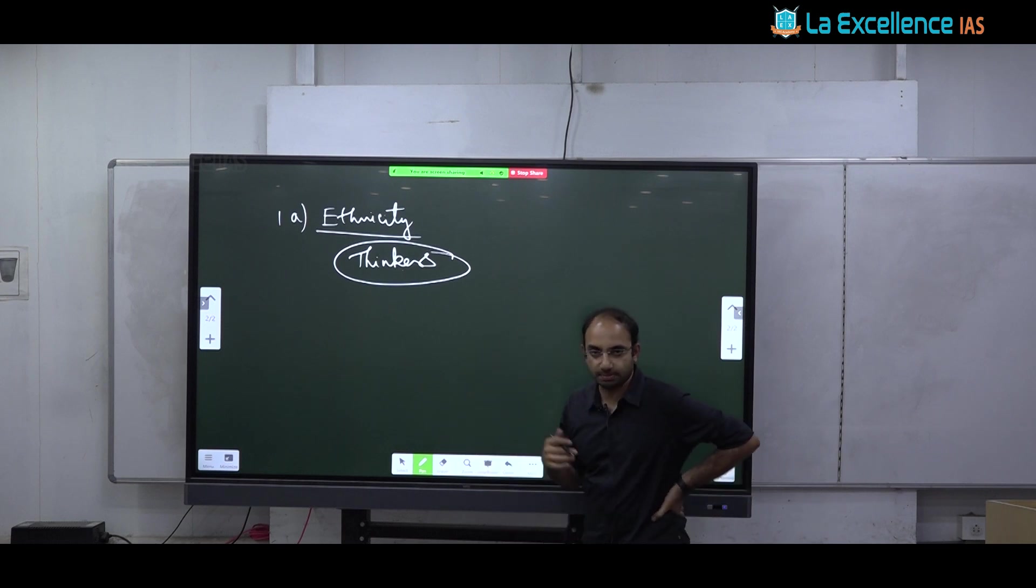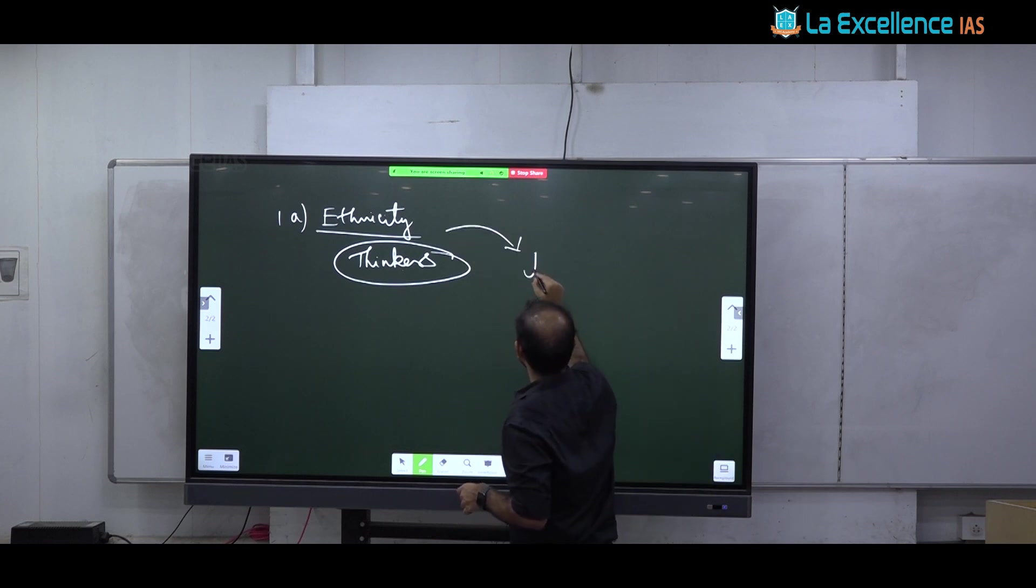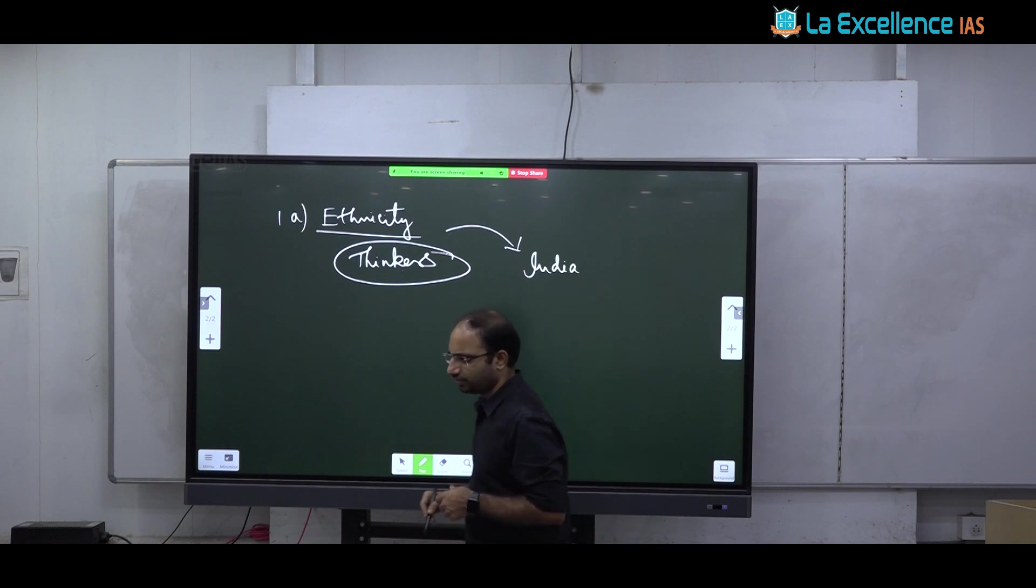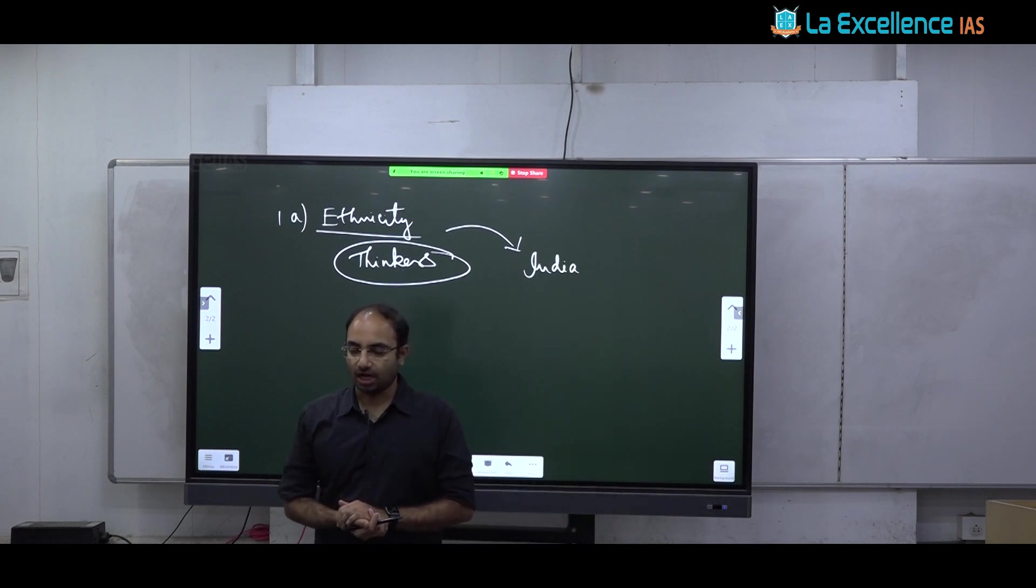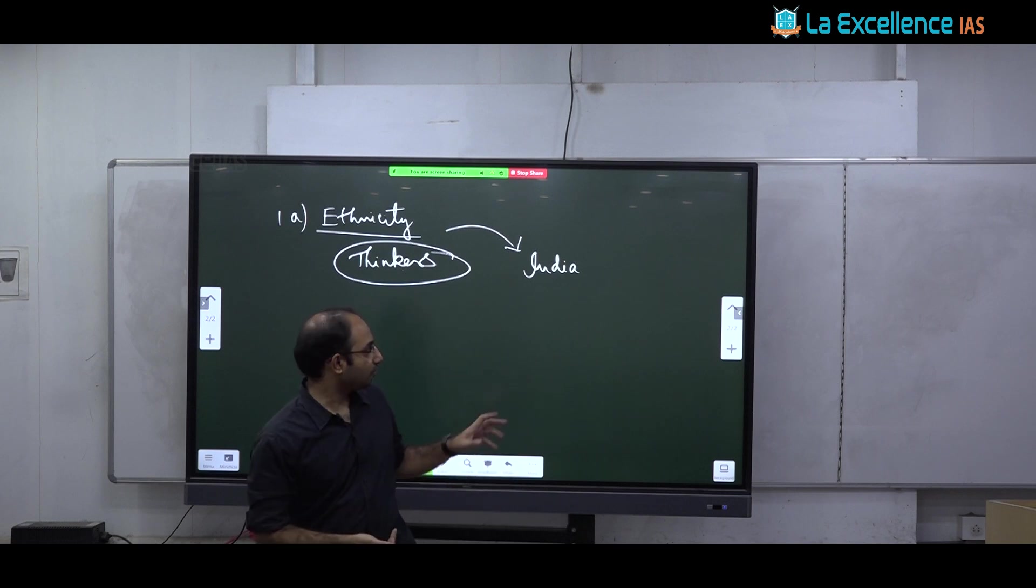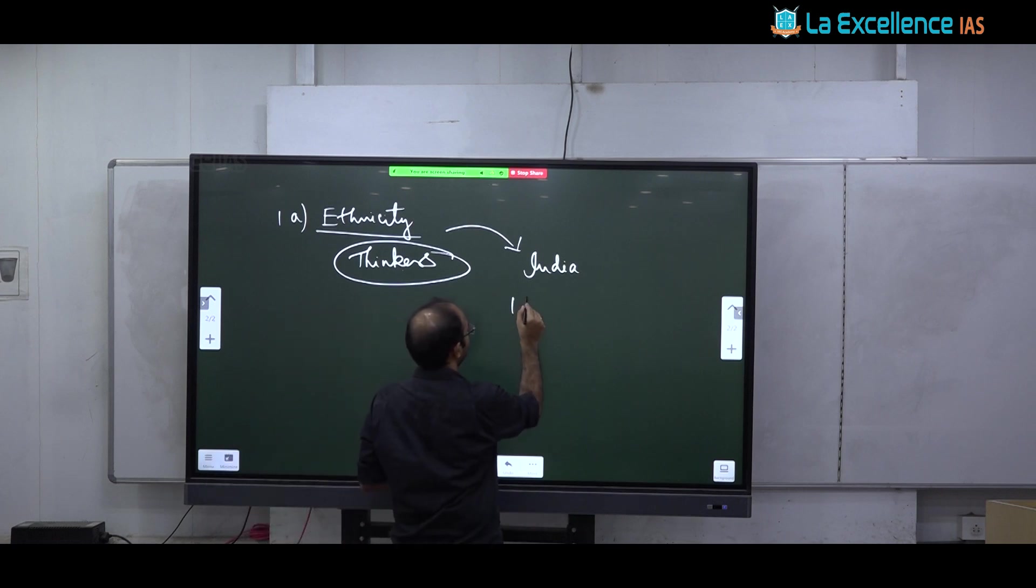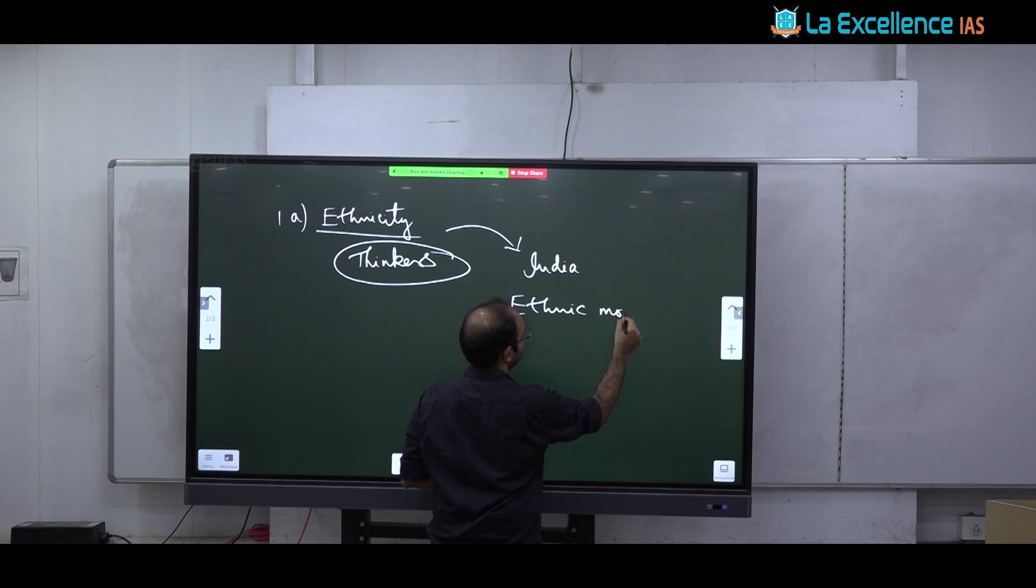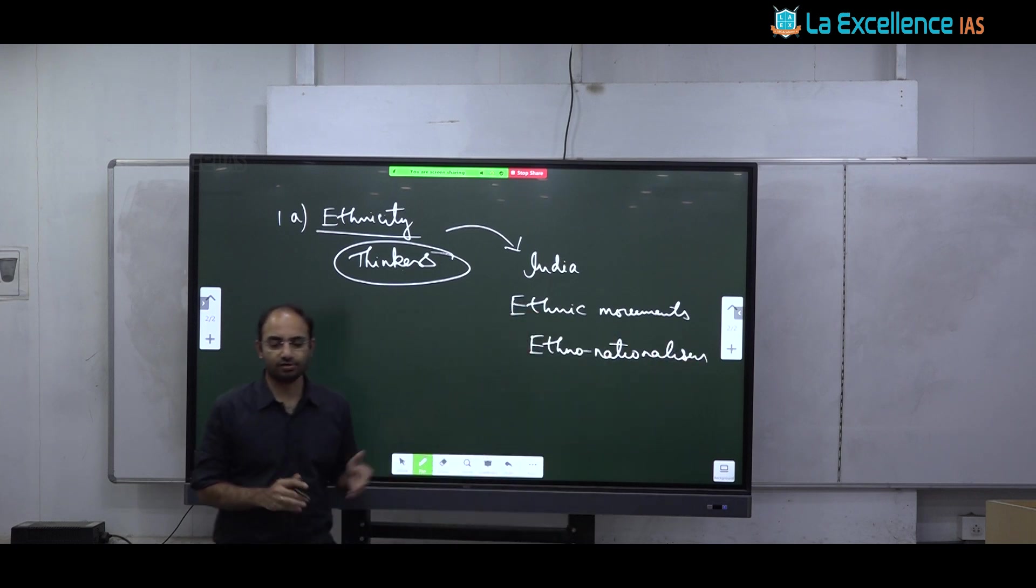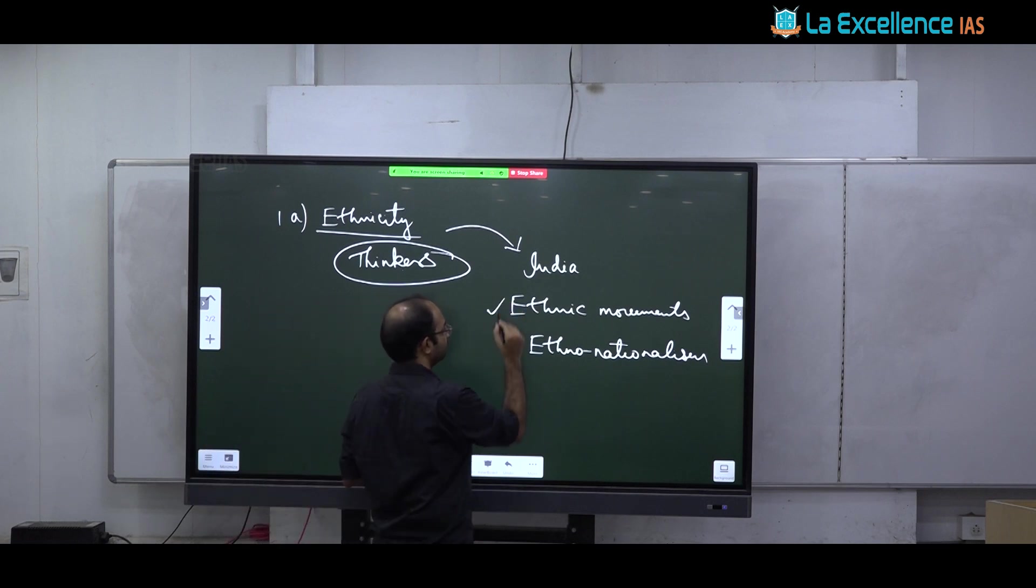Not ethnicity only from thinkers point of view or just keep on discussing how various thinkers have discussed ethnicity. This is not ethnicity in paper 1, ethnicity in paper 2. So what I was expecting is discussing ethnicity in the context of India. I was surprised why there was not much focus on this aspect. Why there was not much attention to the issue of how ethnicity is playing a role in the Indian scenario.